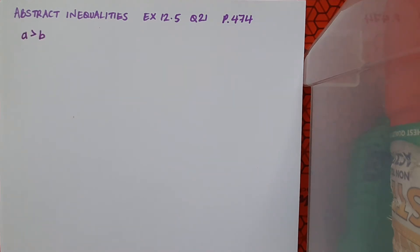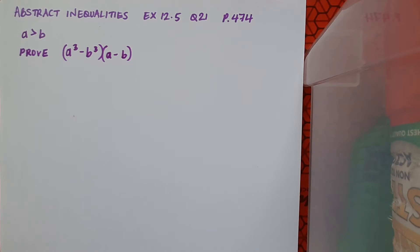To begin with in this question, they're giving us a fact, which is that a is greater than b. And on the basis of this, I want to prove that a cubed minus b cubed times a minus b is always positive, which I can write as a cubed minus b cubed times a minus b is greater than zero.